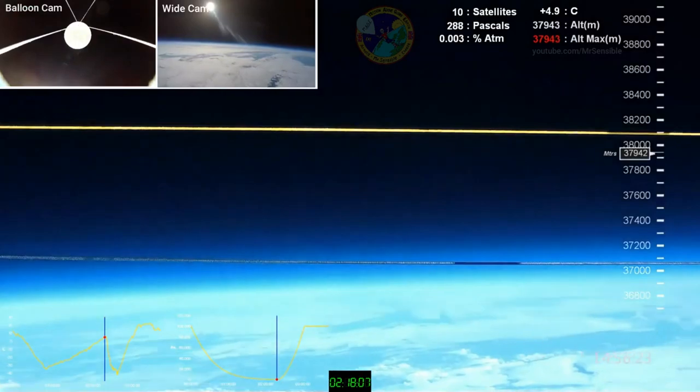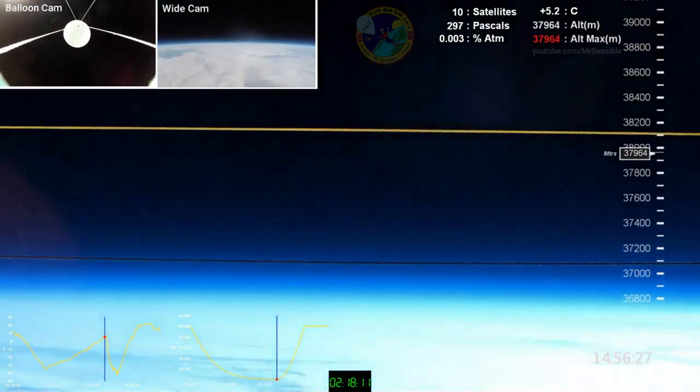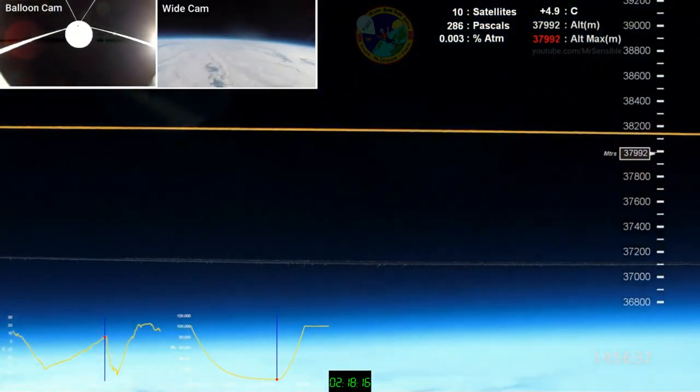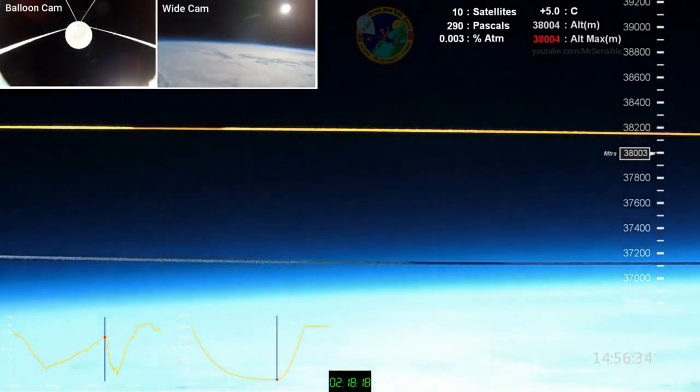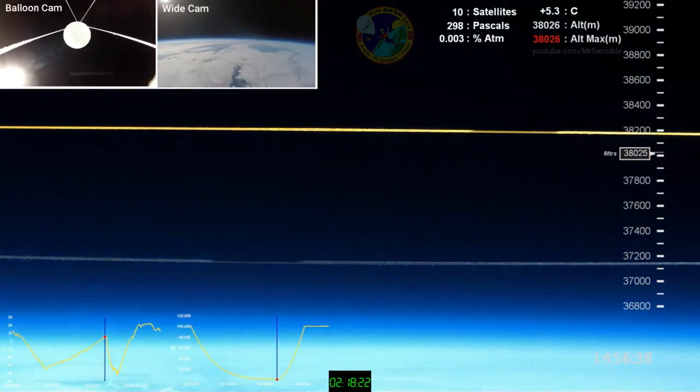Instead, I want to address the fraudulent claim that Mr. Sensible filmed the curvature of the earth from 127,000 feet. Of course, that contradicts Neil deGrasse Tyson's claim that you cannot film the curvature of the earth from that same altitude.